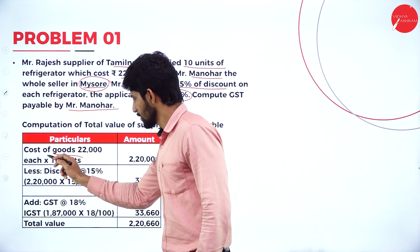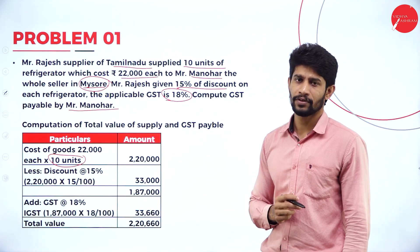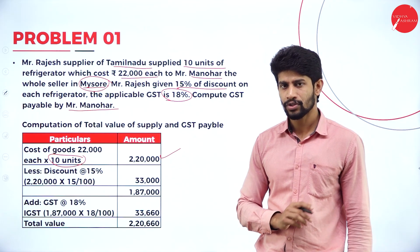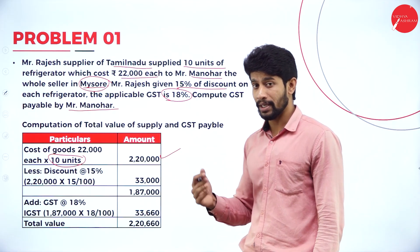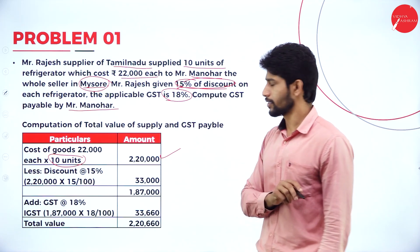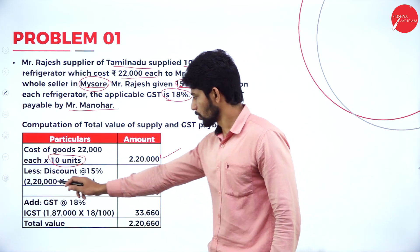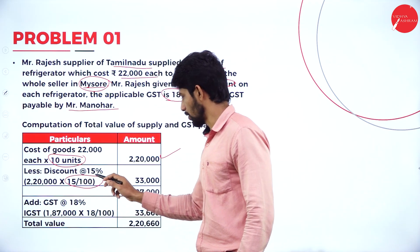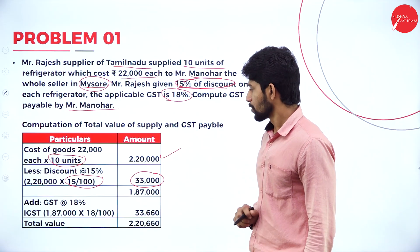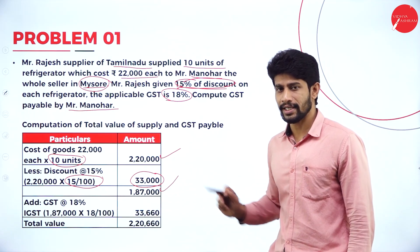The supplier is supplying 10 units of refrigerator. Cost is 22,000 per unit, so 22,000 into 10 units totally comes to 2,20,000. This is the actual value of the refrigerator. But the supplier had given a discount of 15%, so less discount: 2,20,000 into 15% gives a discount value of 33,000. Deduct 33,000 from 2,20,000, you will get a balance of 1,87,000.